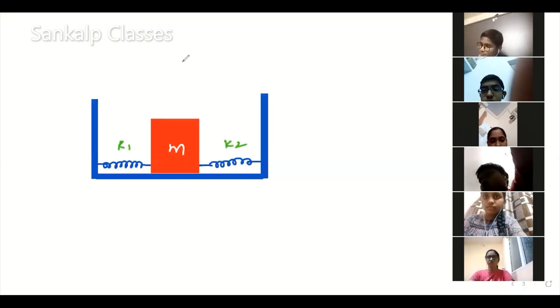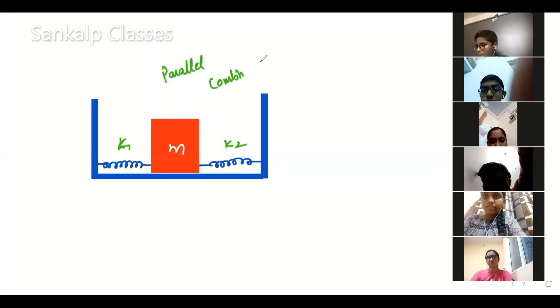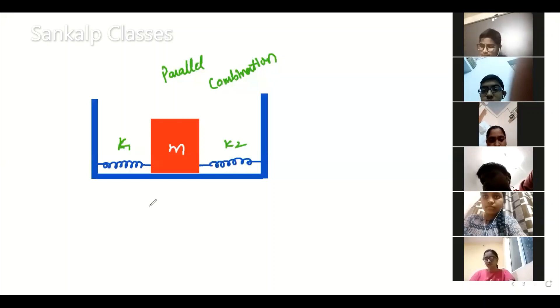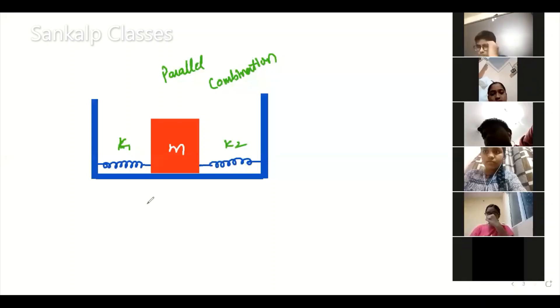Here, spring constants K1 and K2. This is also a parallel combination. Two springs connected in parallel — it's a parallel combination.